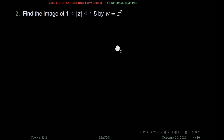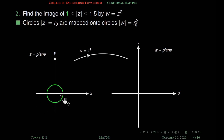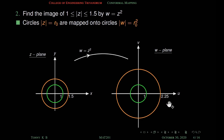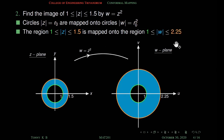Find the image of the region 1 ≤ |z| ≤ 1.5 under the transformation w equal to z square. Circles |z| equal to r₀ are mapped to circles |w| equal to r₀². The circle |z| equal to 1 maps to |w| equal to 1, and |z| equal to 1.5 maps to |w| equal to 1.5² equal to 2.25. So the region 1 ≤ |z| ≤ 1.5 is mapped onto the region 1 ≤ |w| ≤ 2.25. This is because z square is conformal, so it preserves sides.